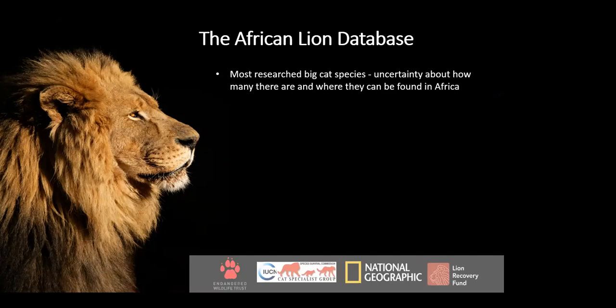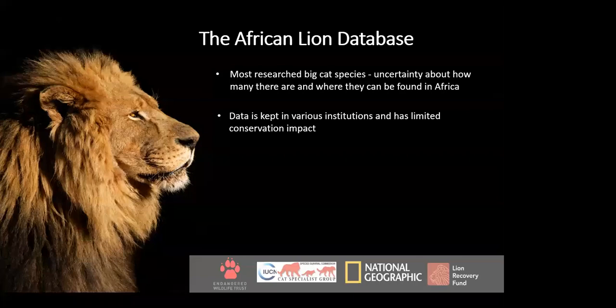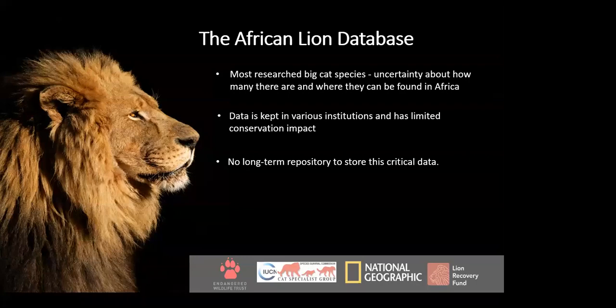Although the lion is one of the most researched big cat species in Africa, there is plenty of uncertainty regarding how many there are and where exactly they can be found across the continent. The data that exists is kept in various institutions — research organizations, individual researchers, or governmental organizations — or it's stuck in published papers or reports. This has very limited conservation impact, partially due to the fact that there's been no long-term data repository to store and maintain this critical data.